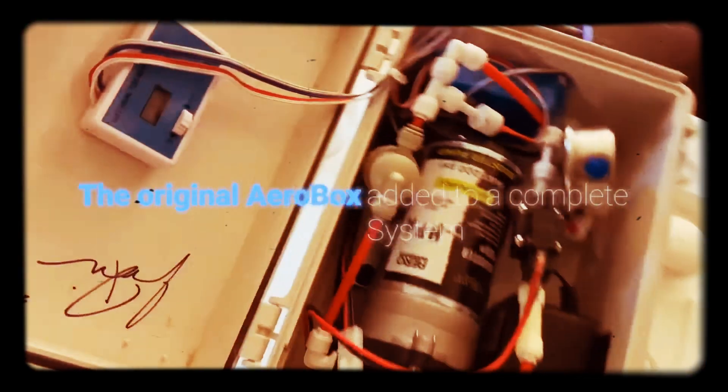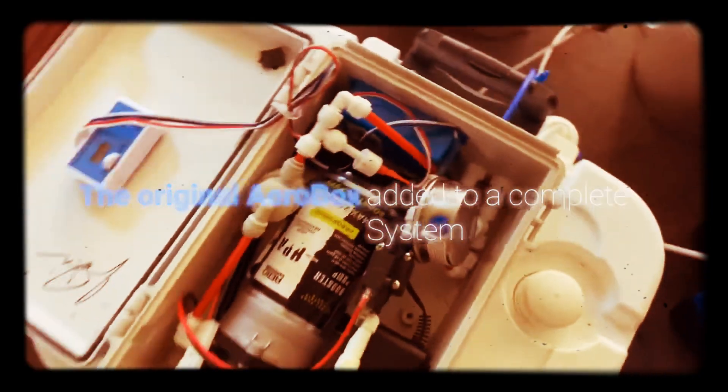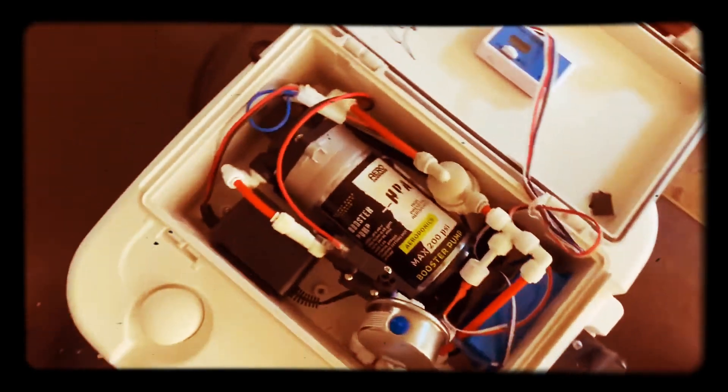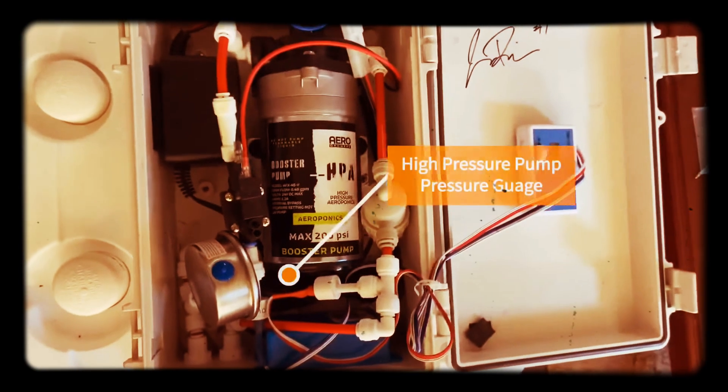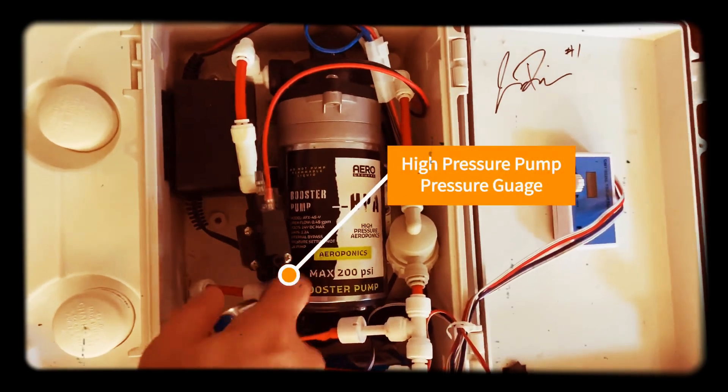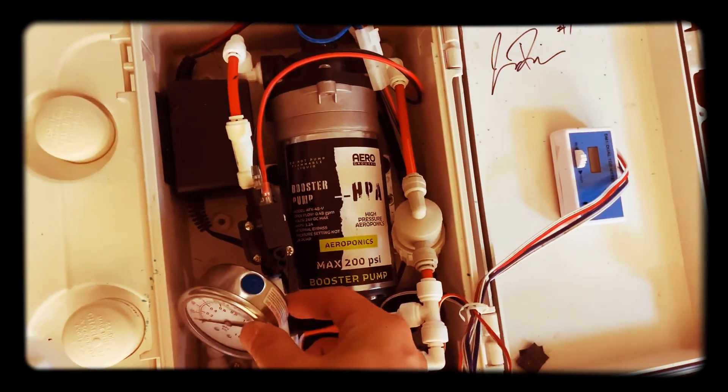Here's my original AeroBox which I added to this system. It's just bolted down to the top of the lid of the Igloo cooler and it still comes with the high pressure pump. Got some better labels.